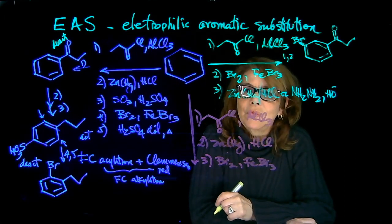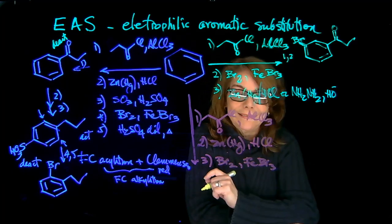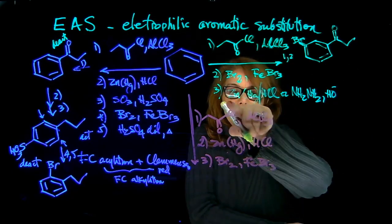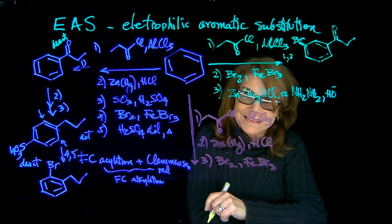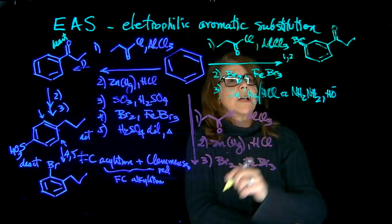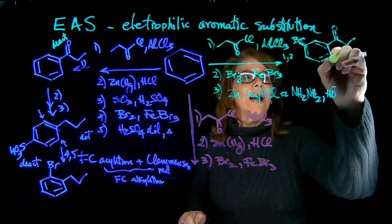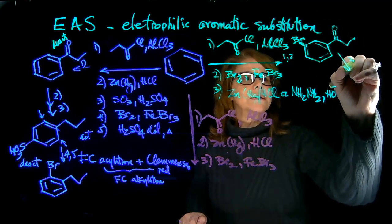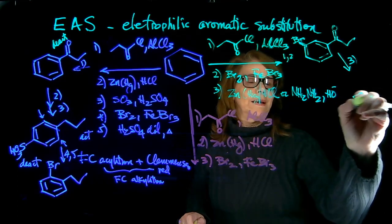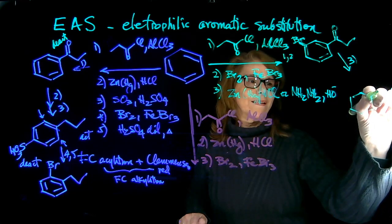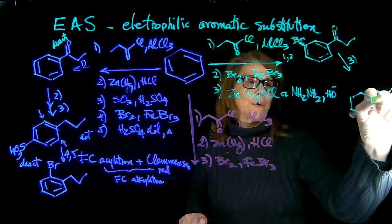And what's in step three? Step three is the Clemson reduction of that carbonyl. You can do the reduction in this condition, or you can also use hydrazine in basic condition. What is this used for? To remove the carbonyl. So the final product after step three is, we don't have a carbonyl anymore.